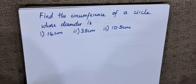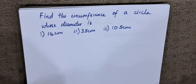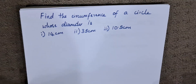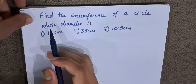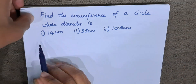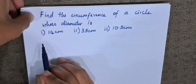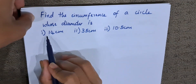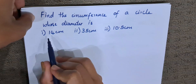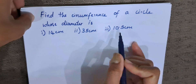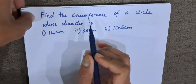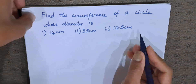Hello everyone, welcome to AG Mathematics. This is Rekha here. Today we are going to find the circumference of a circle whose diameter is given. There are three sums in this one and they have given the diameters in centimeters. We have to find the circumference of a circle.